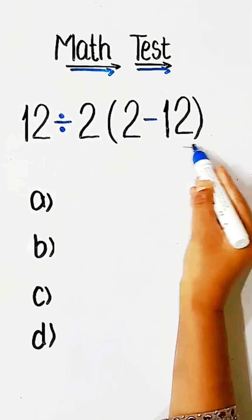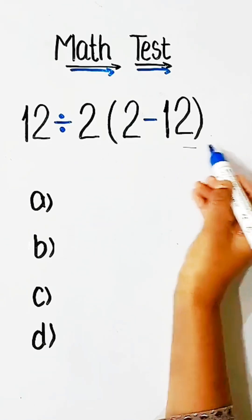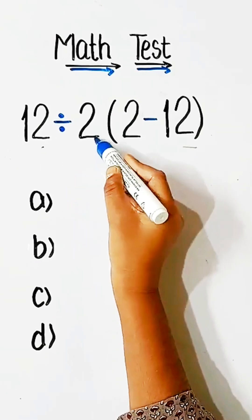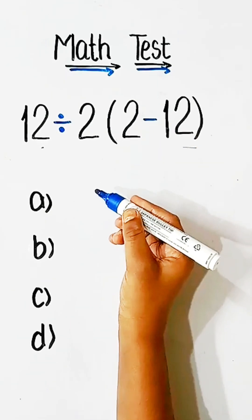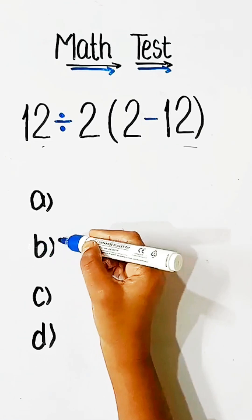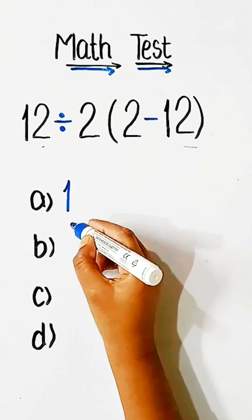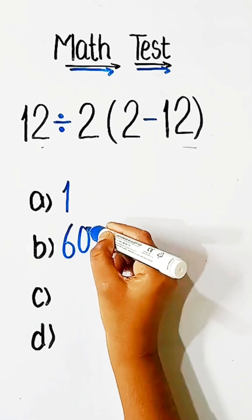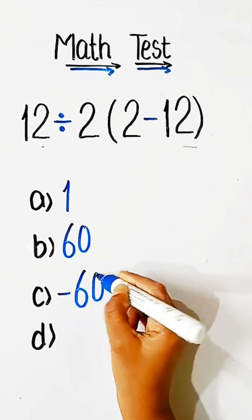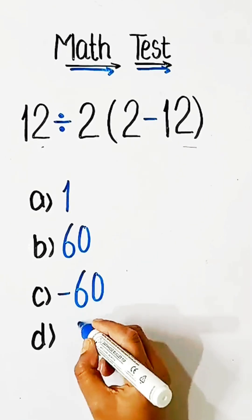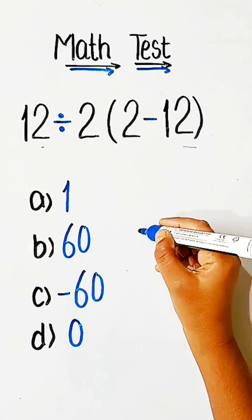Math test: how fast can you solve this expression? 12 divided by 2, into 2 minus 12, equals what? Option A: 1, Option B: 60, Option C: minus 60, or Option D: 0. Comment your answer.